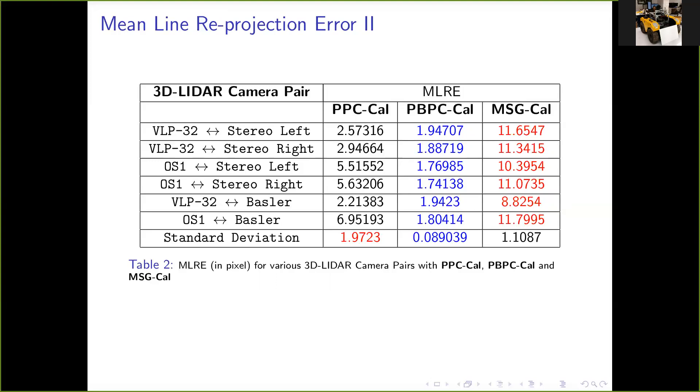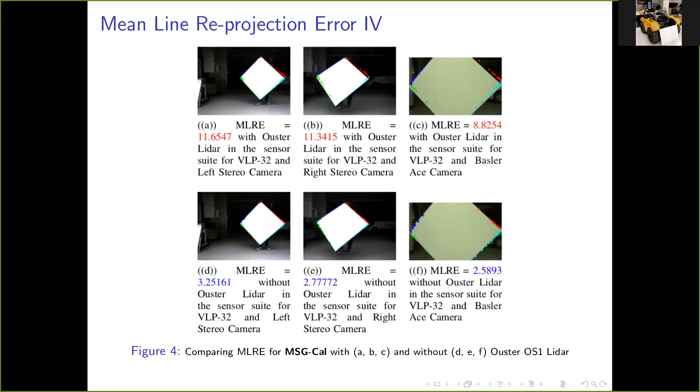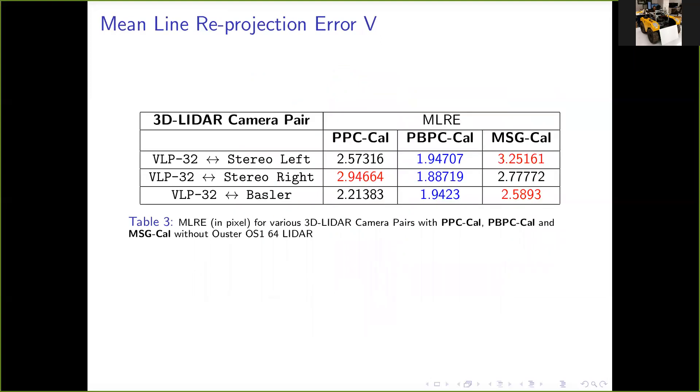To verify our hypothesis, we calibrate the sensor suite with Ouster LIDAR removed from it and present the results in Figure 4 and Table 3. On comparing figures 4A, B and C against figures 4D, E and F which present results with and without Ouster LIDAR respectively, we can conclude that MSG-Cal performs better when the Ouster LIDAR is removed. As seen in figures 4D, E and F, the projected LIDAR edge points are well aligned with the edges of the planar whiteboard, which is not the case in figures 4A, B and C. From Table 3, we can conclude that PPC-Cal and MSG-Cal give comparable performance when the Ouster LIDAR is removed. And this is expected because MSG-Cal uses the same point-to-plane geometric constraint for pairwise calibration that PPC-Cal uses.